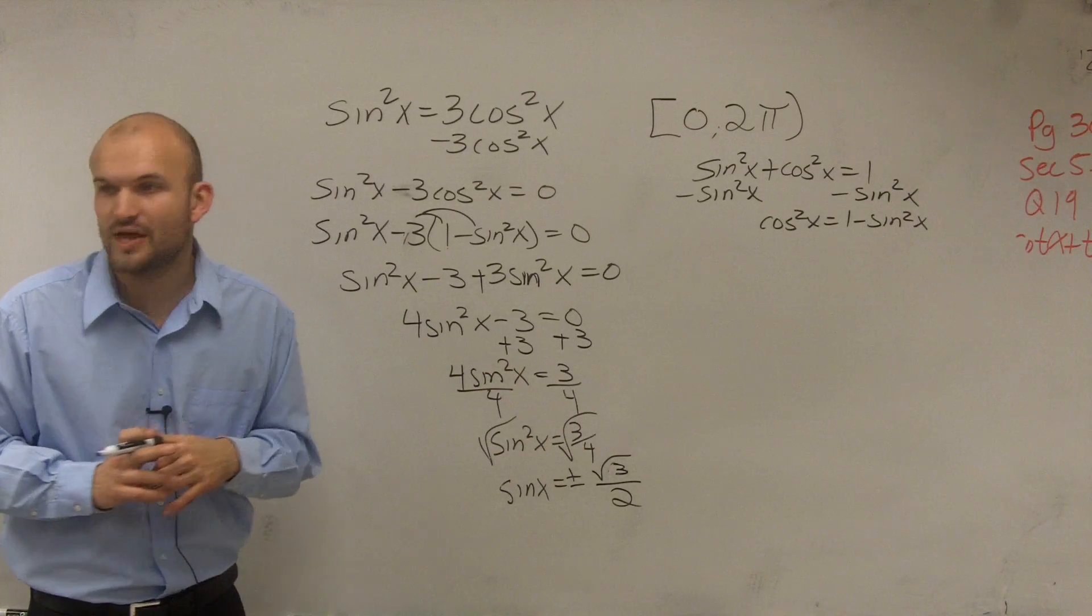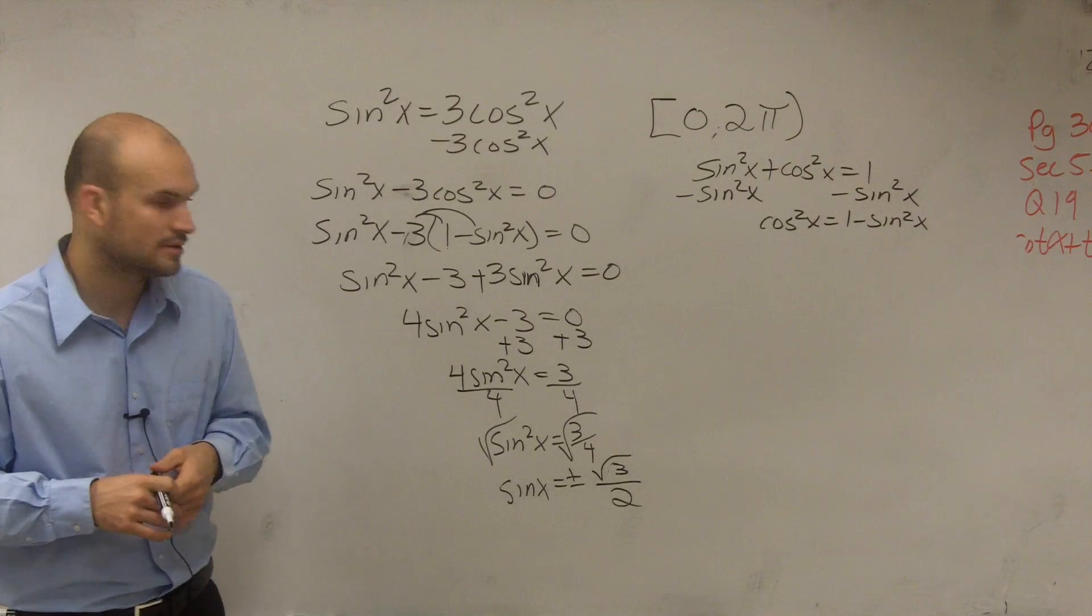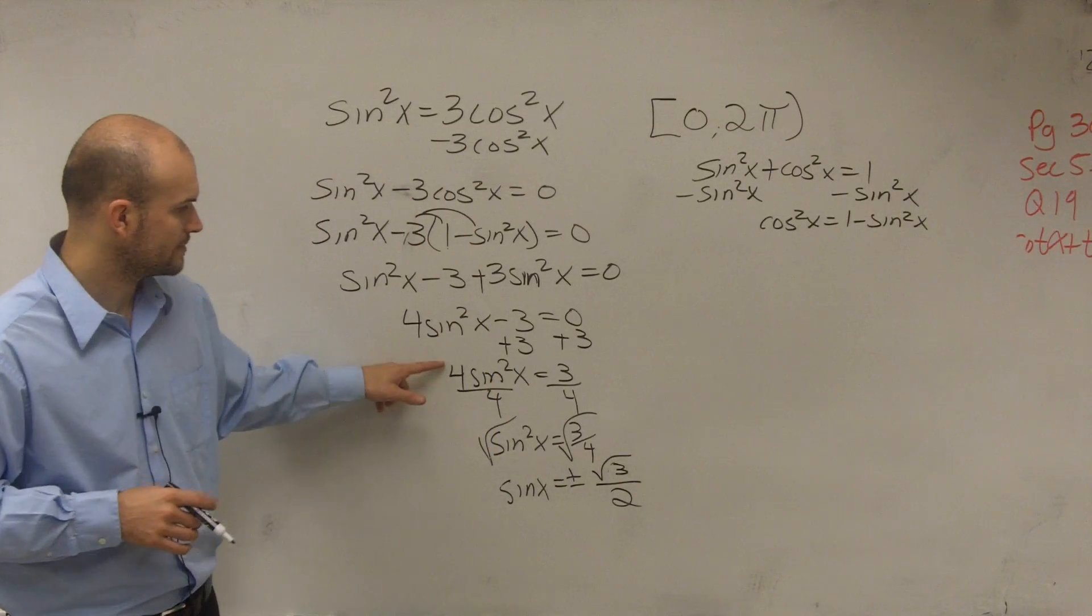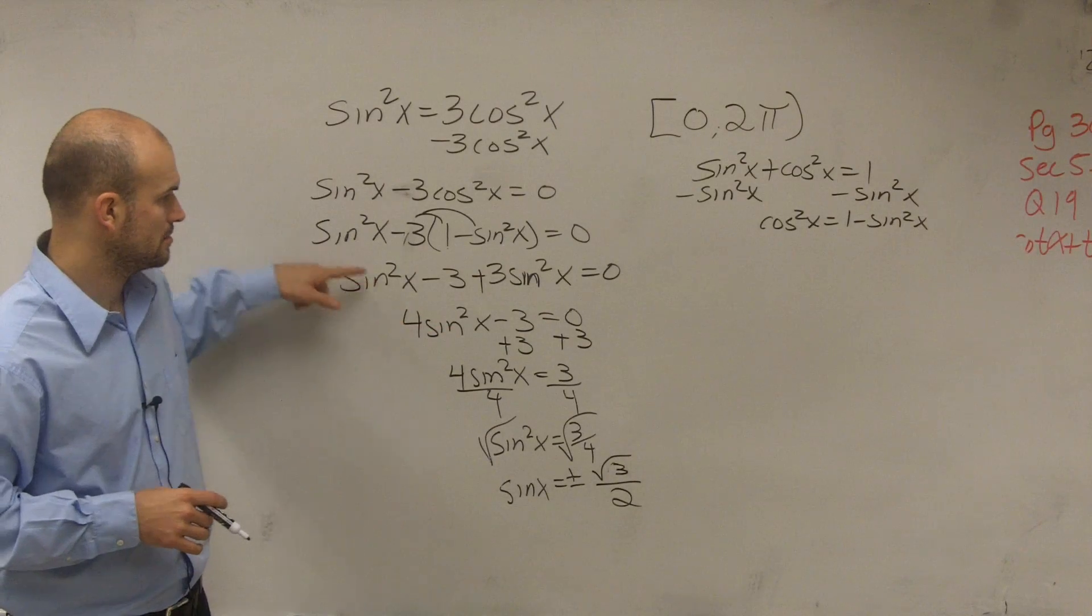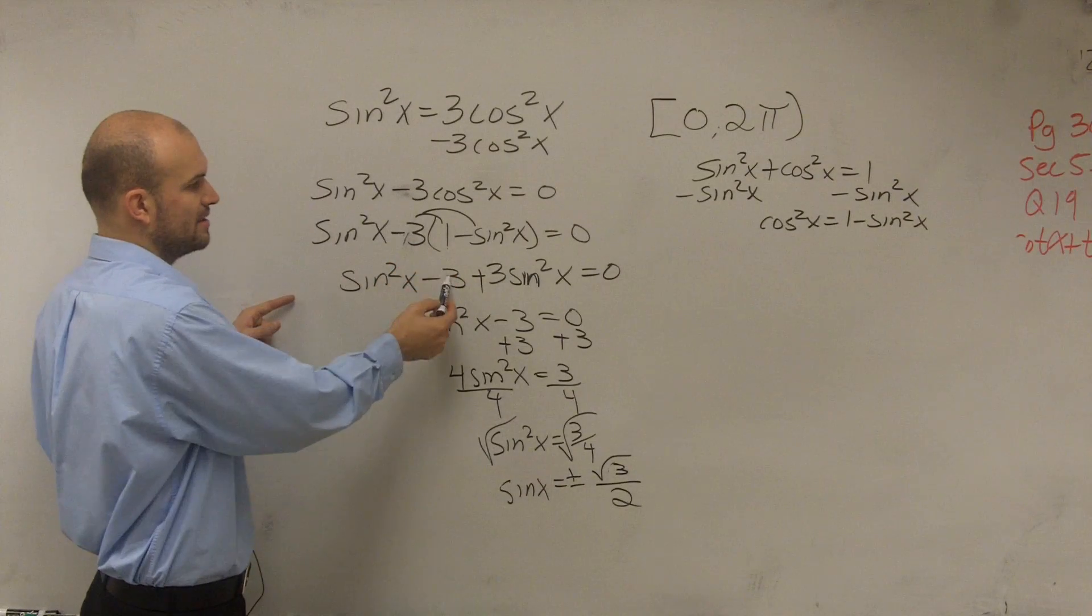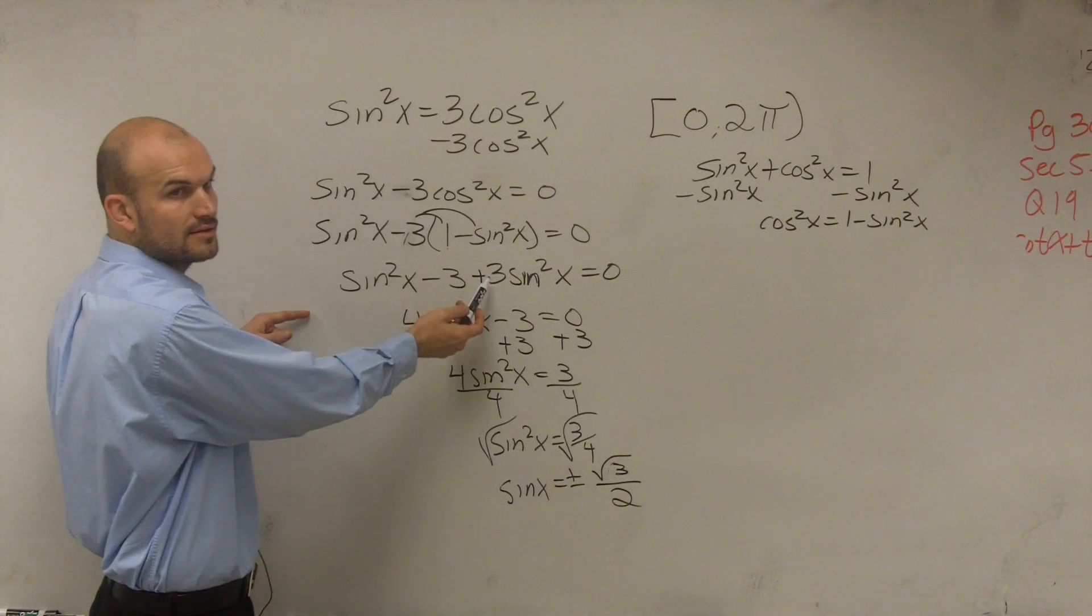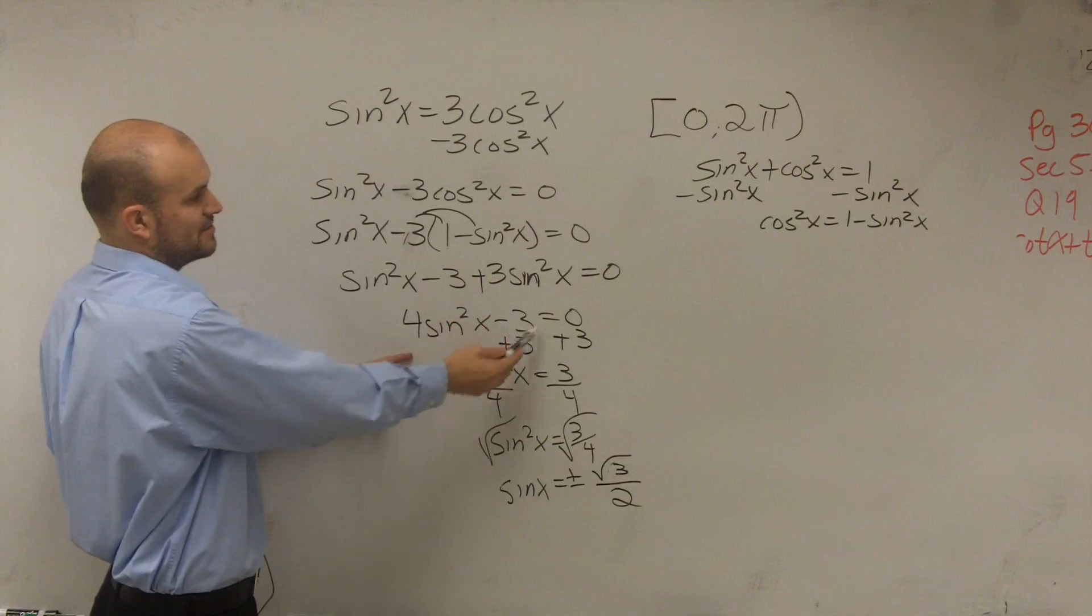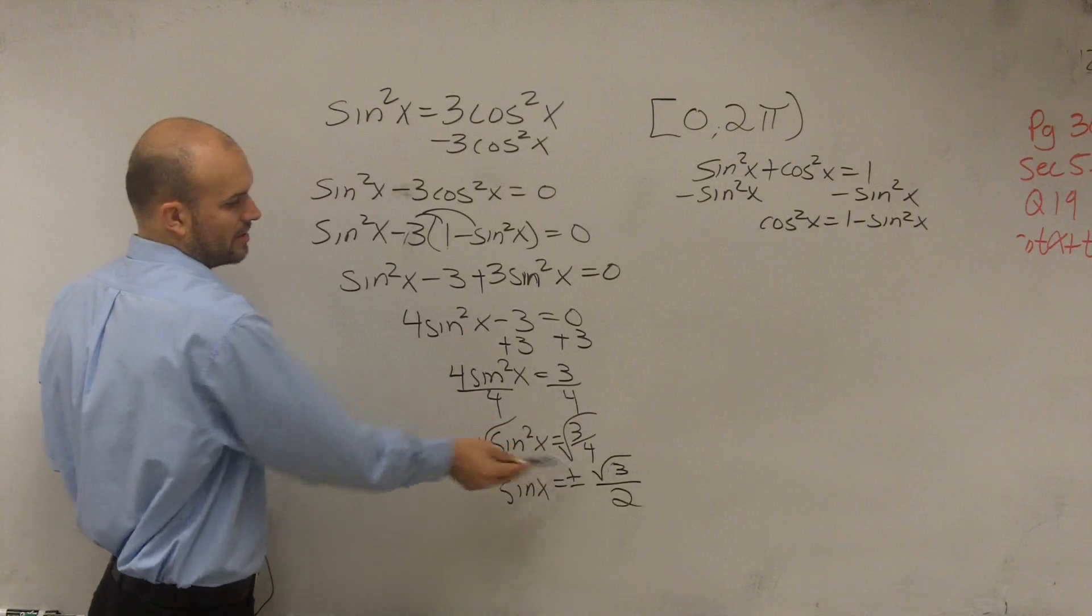So now I need to find all the values of x that equal plus or minus the square root of 3 divided by 2. Because you can take the square root of 4, which is going to be 2. When you take the square root of a rational term, you have to take the square root of the top and of the denominator. The square root of 3 is just square root of 3 and the square root of 4 is now going to be 2.